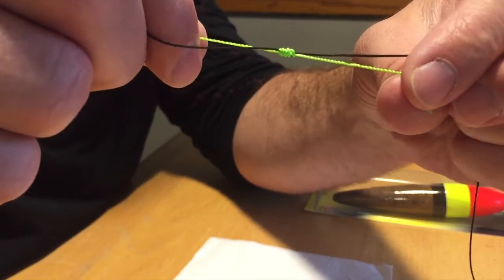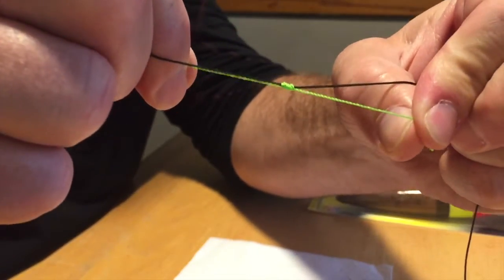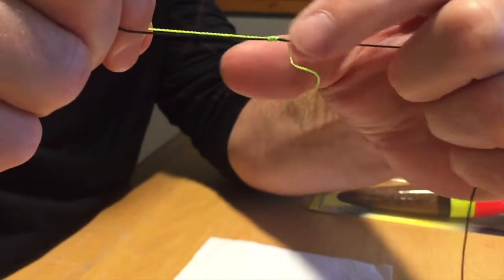And you slowly pull each side tight. So there's your slip string. You can slide that up and down.